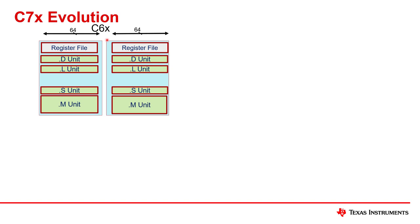On C6000 there is an A side and a B side. This diagram seems to indicate they're identical — they're not identical, but they're very similar. Register files and units and so on are concepts we've already seen.